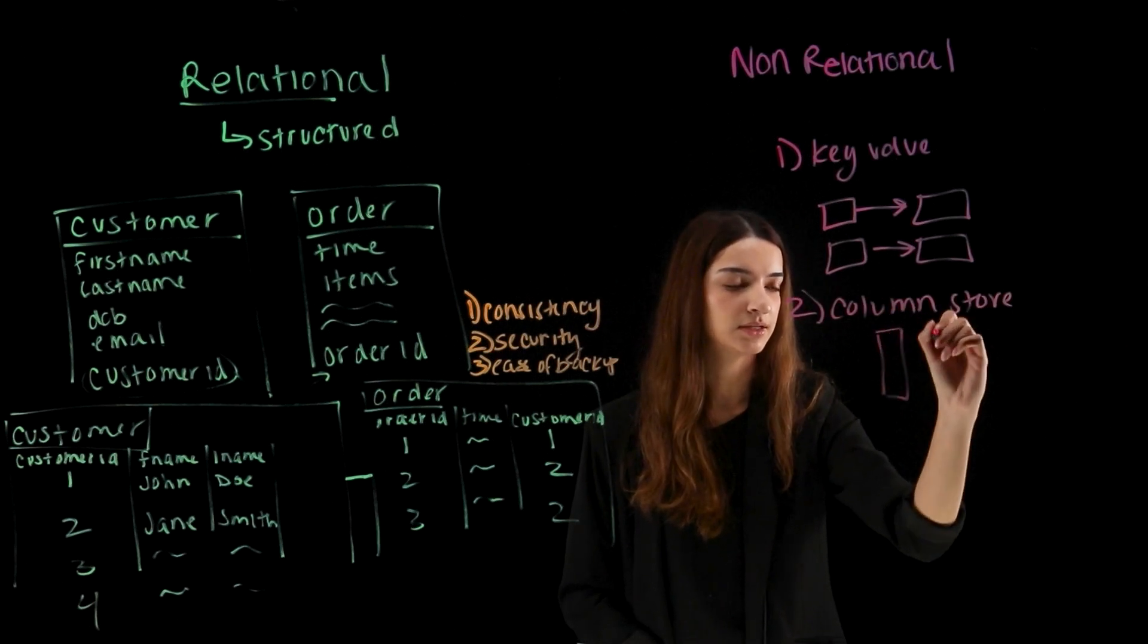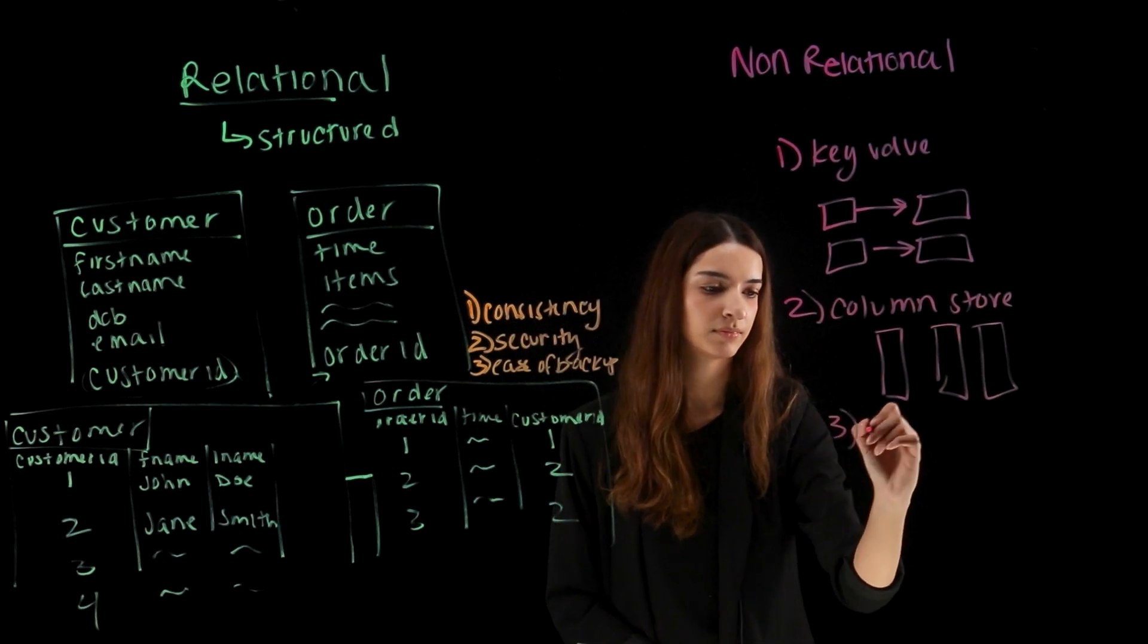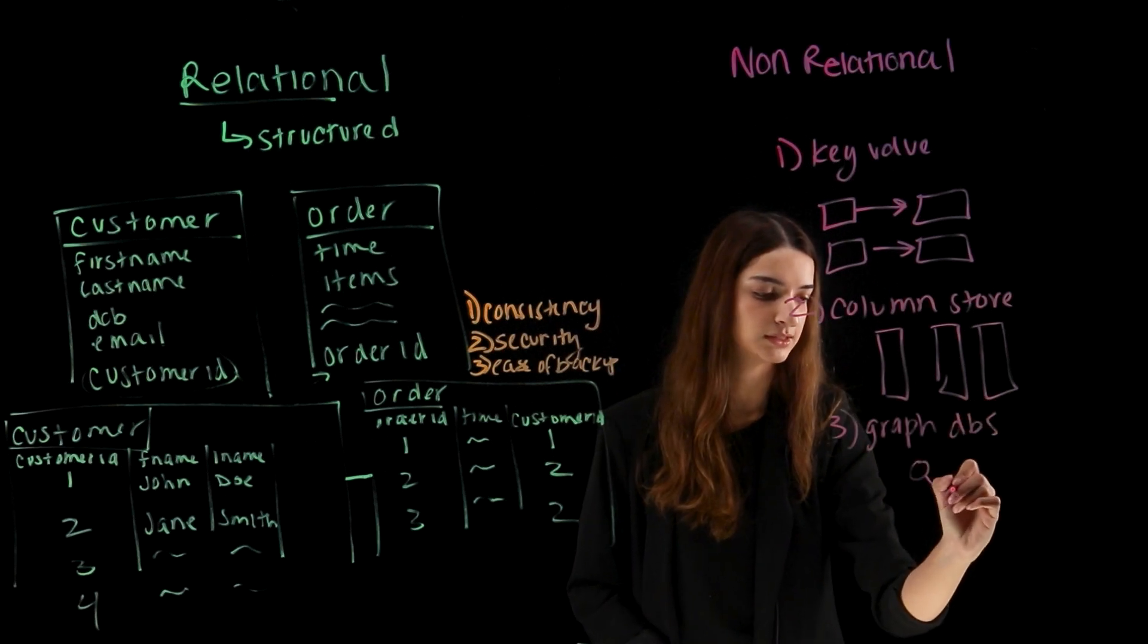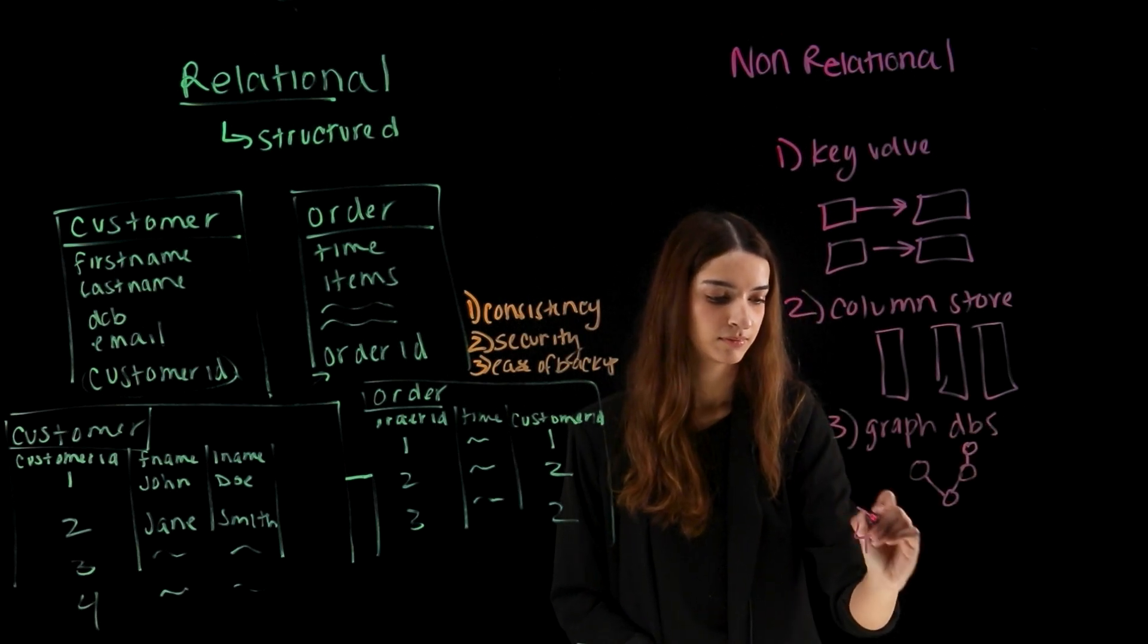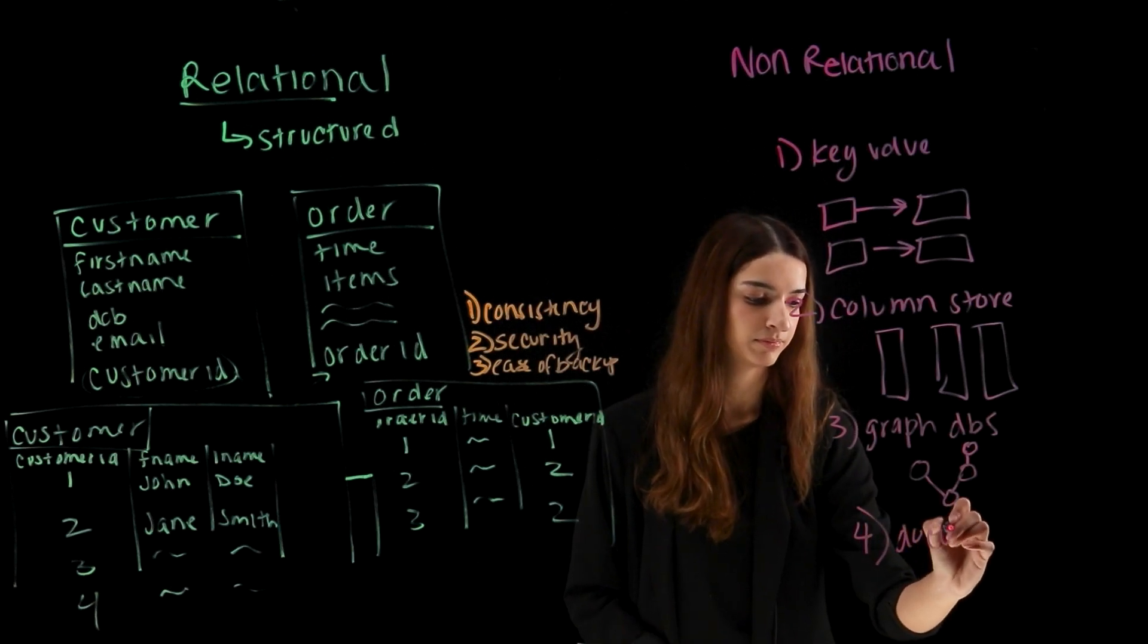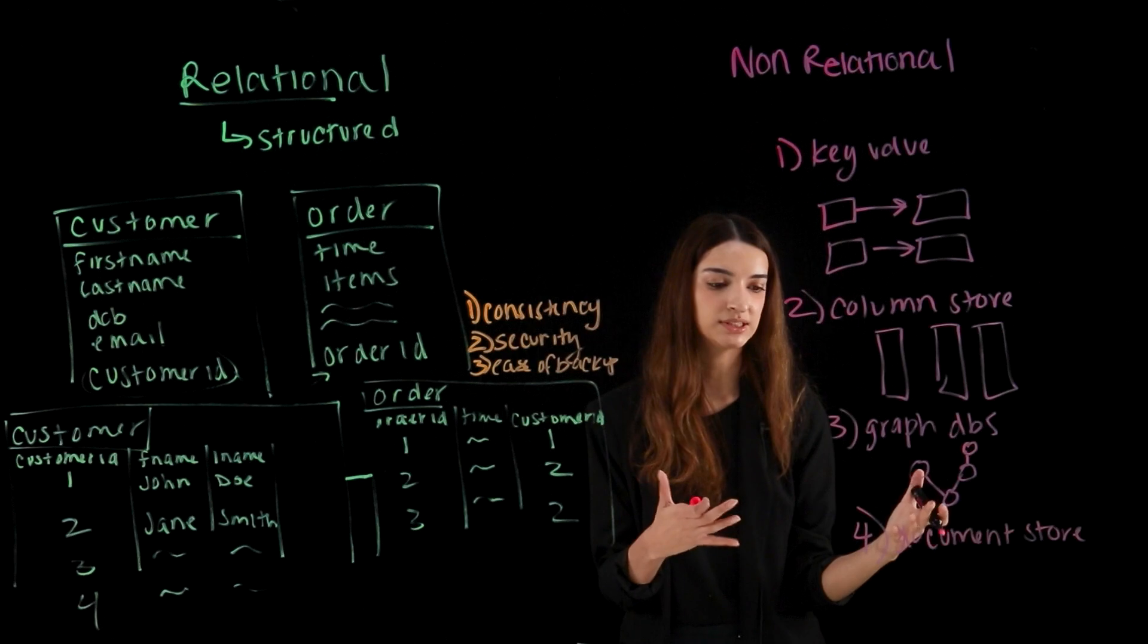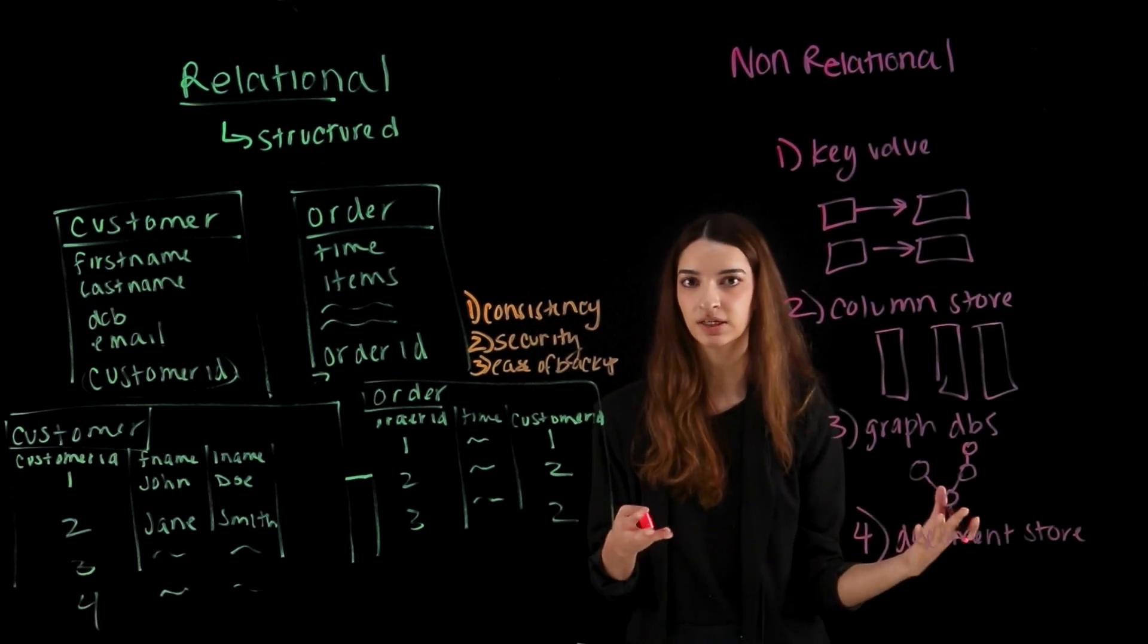And then we have graph databases. So this shows different entities in the database and how they connect to each other in a graphical way. And finally, we have our document store databases. So this has data in documents and a group of documents is called a collection. And you can essentially retrieve the information as it relates to a single collection.